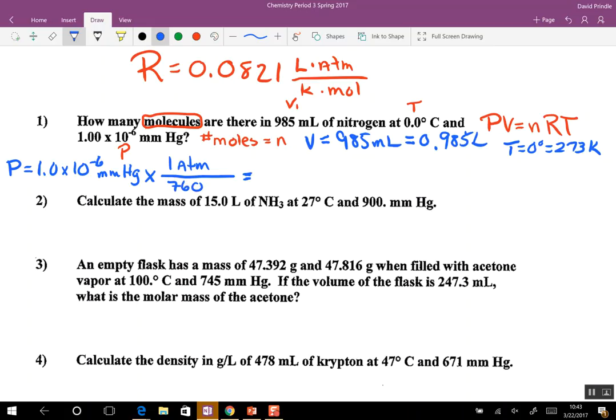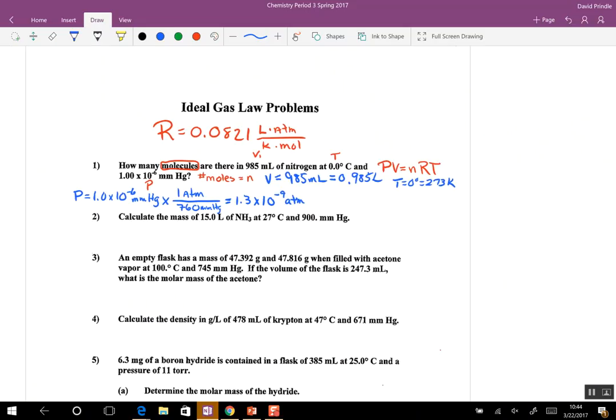So take your handy dandy little calculator and convert that over. And you get 1.3 times 10 to the negative ninth atmospheres. Now we have everything in the correct format that we need. So I'm going to shrink it up a little bit so I can solve it.